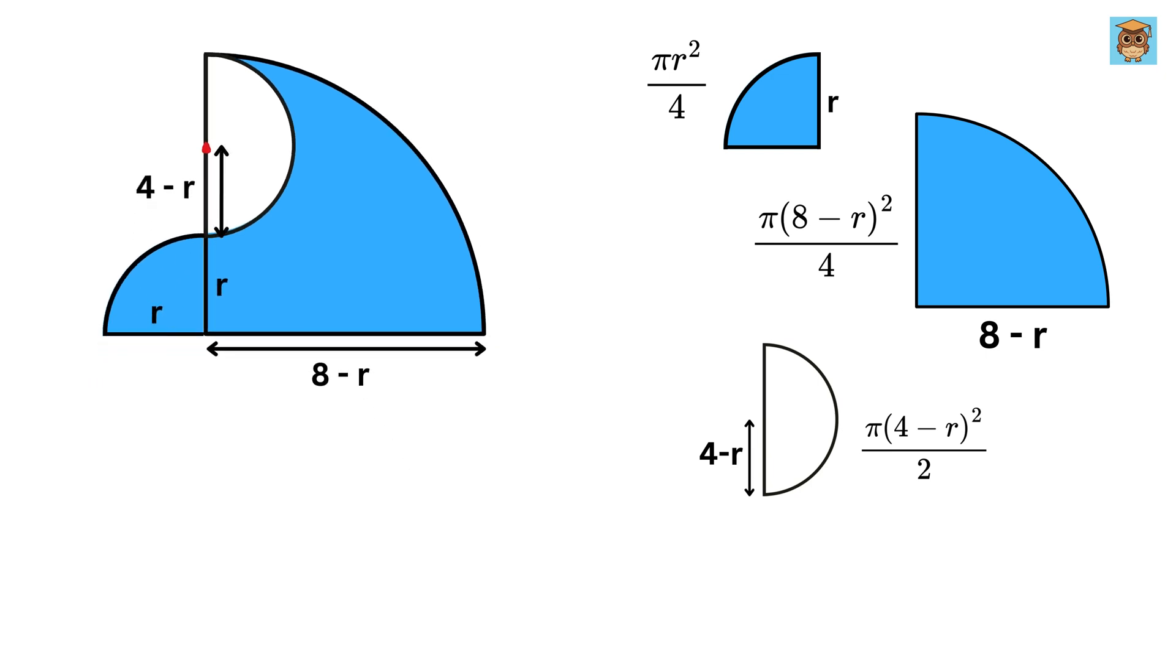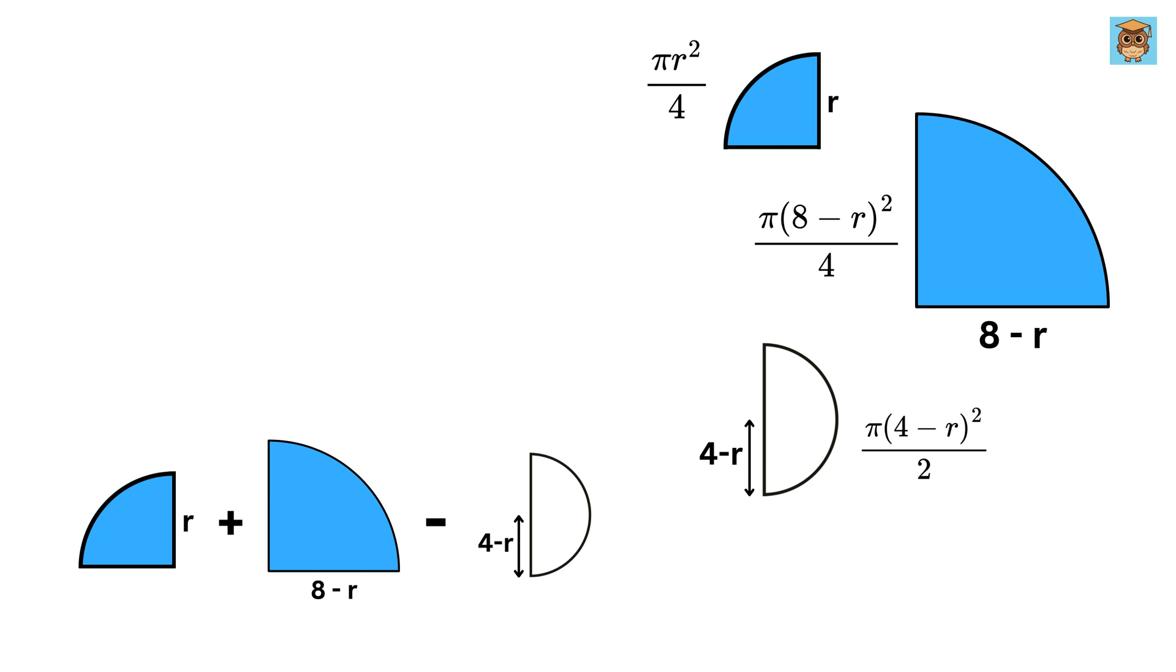But this is not what we want. We need the area of this blue region. And this region's area equals the area of this quarter circle plus the area of this quarter circle, and then we have to remove this semicircle from it. So it will be this plus this minus this.